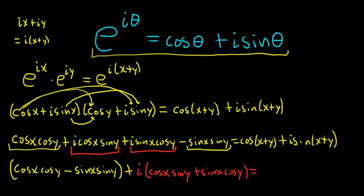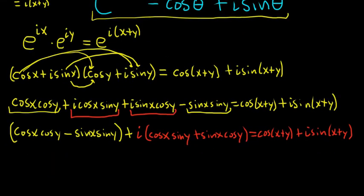And that's equal to the right hand side. This is cosine x plus y plus i sine x plus y. And look at that. We have two amazing trig identities.